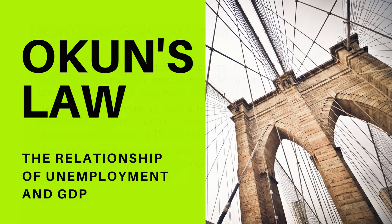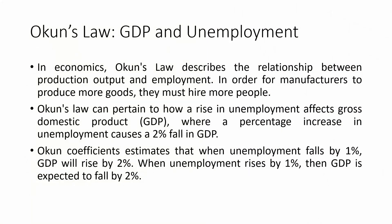There's a relationship between unemployment and GDP, as stated by Okun's Law. Okun's Law describes the relationship between production output and employment. What is important here is to understand that whenever there's an increase in unemployment, there will be a fall or a decrease in GDP, and vice versa.